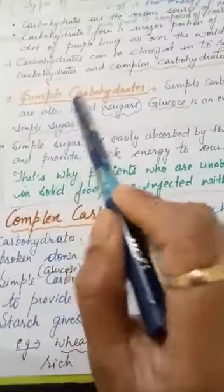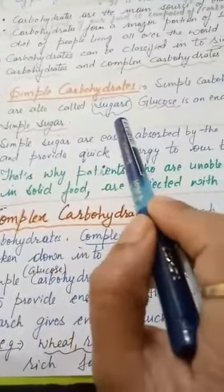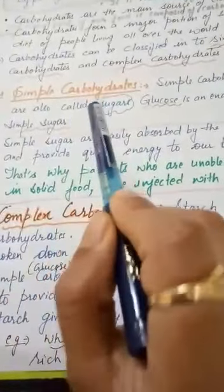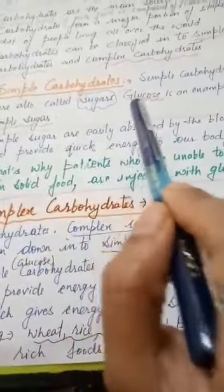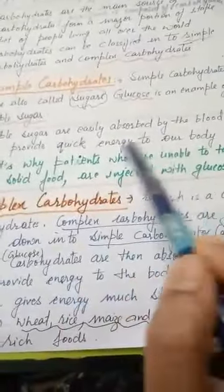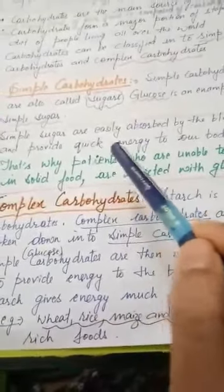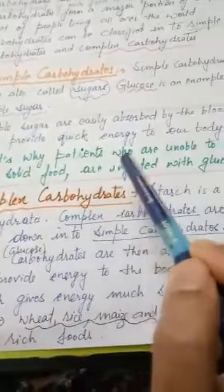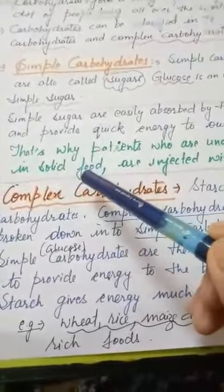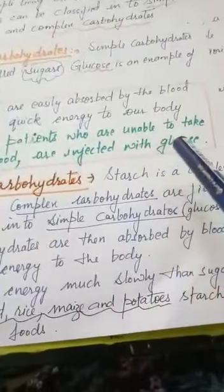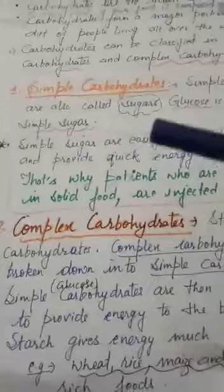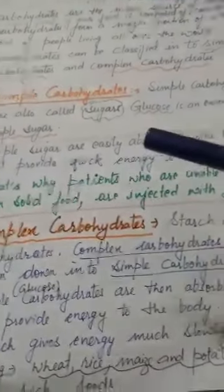Simple carbohydrates are also called sugars. Glucose is an example of a simple sugar. Simple sugars are easily absorbed by the blood and provide quick energy to our body. That is why patients who are unable to take solid food are injected with glucose as a drip. As you may have seen in hospitals, when someone is ill and cannot take food, they are given glucose in liquid form through a drip.